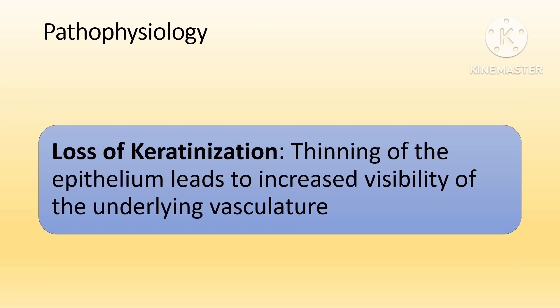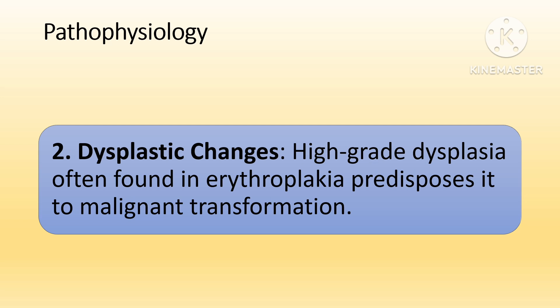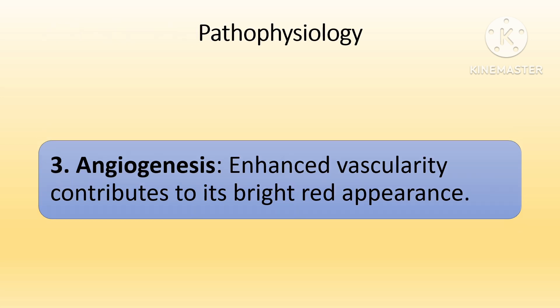Erythroplakia is due to three main causes: loss of keratinization, dysplastic changes, and angiogenesis. In erythroplakia, there is thinning of the oral epithelium. This loss of keratinization exposes the underlying blood vessels, making the lesion appear bright and velvety in texture. The lesion often shows high-grade epithelial dysplasia — abnormal cellular changes characterized by increased cell division and loss of normal architecture. One of the defining features is increased vascularity or angiogenesis, as blood vessel formation contributes to the lesion's red color and may support tumor growth.